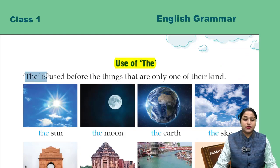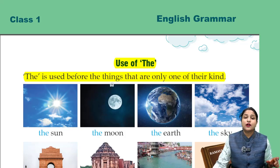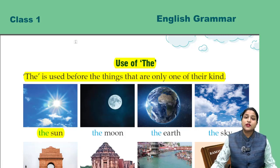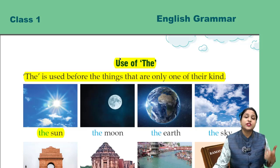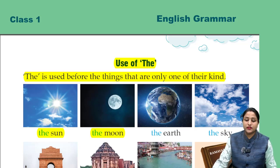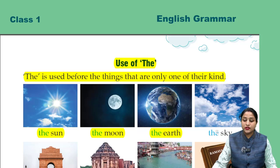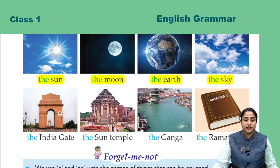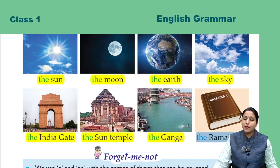Use of The. The is used before things that are only one of their kind. The hum un chizo se pehle lagate hain jo apni tarah ki sirf ek hi hai. Jaise hum baat karte hain: the sun — sun bahut saare nahi hain, sun sirf ek hai, so sun se pehle kya aayega? The. The moon — moon bhi ek hai, so moon se pehle the. The earth, the sky — ye sab chizein ek hi hain, isliye inke aage the lagta hai. The India Gate, the Sun Temple, the Ganga, the Ramayan.